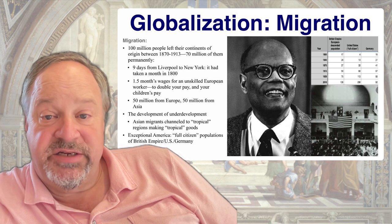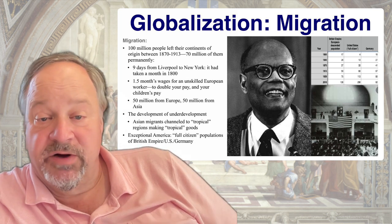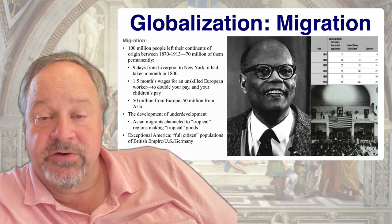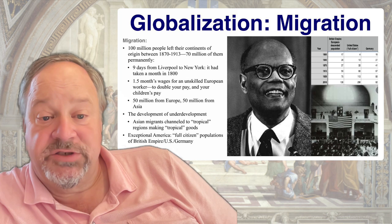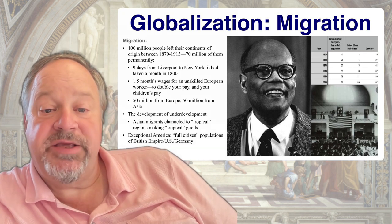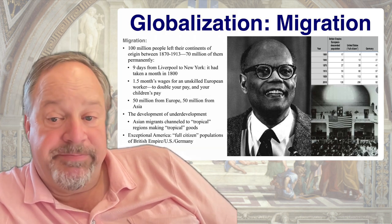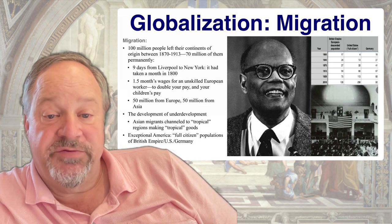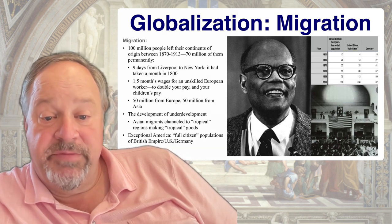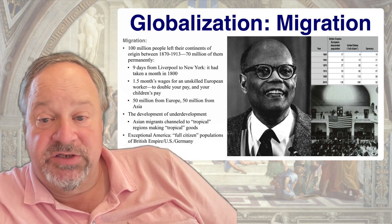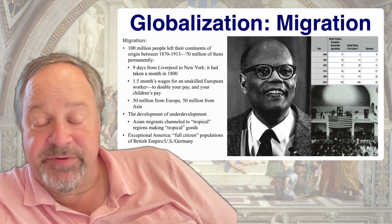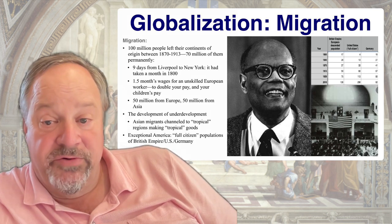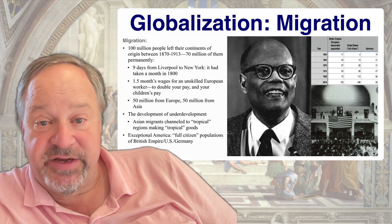Why? Because after 1870 it took only nine days to go from Liverpool to New York, while it had taken a month in 1800. After 1870 it took only one and a half months' wages for an unskilled European worker to move across oceans and double your pay and your children's pay when you do so. So 50 million people came from Europe and 50 million from Asia — but the people from Asia were kept out of Europe and the high-productivity temperate zone regions of European settlement, channeled instead to tropical regions making tropical goods.